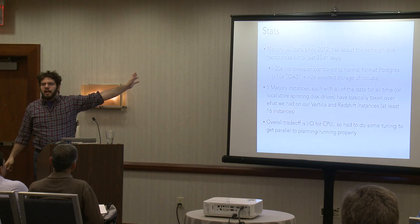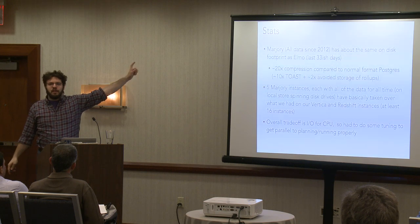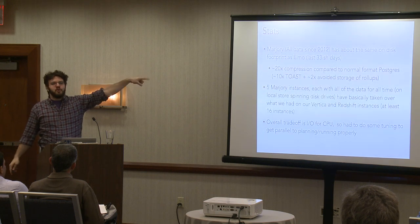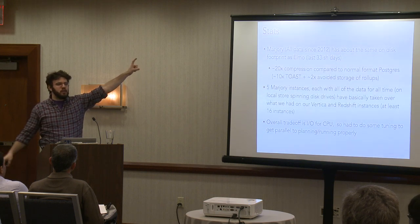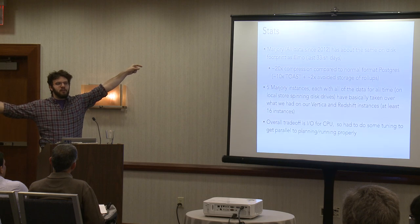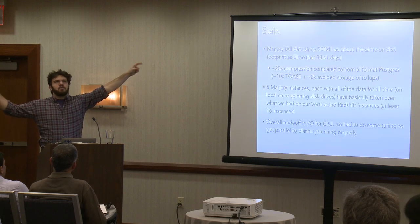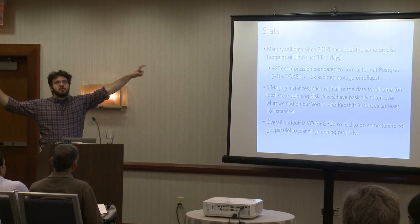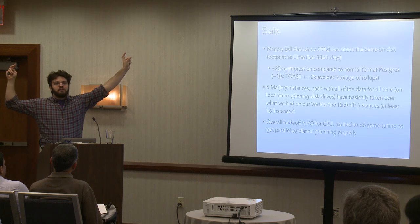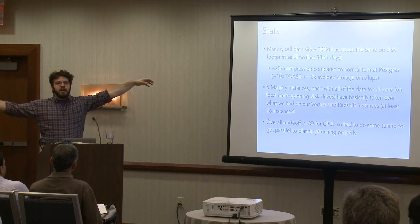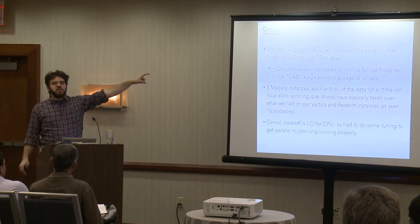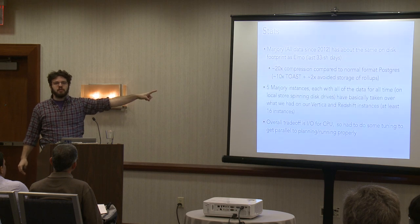When Redshift was doing that query over 150 columns over the four-month date range, it was using eight boxes, 32 cores each, at 40% of their CPU for 12 minutes. Marjorie did it on eight cores on one machine in 30 seconds.